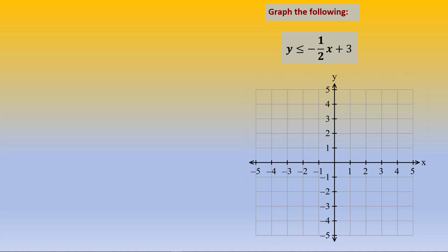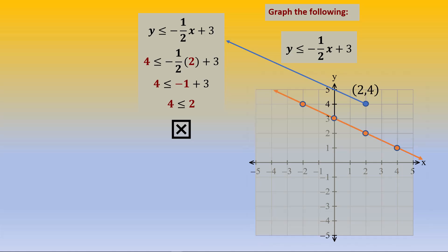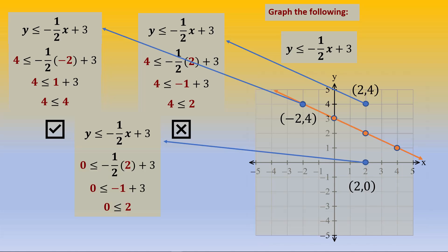Let's try this one. We locate 3 on the y-axis. We go down 1 and over 2 according to the slope — you can even go backwards. We decide the line is going to be solid, and we're going to fill in below the line because of the less than. We pick a point, 2, 4, which is outside the shaded region. We plug it in — this should not work, and indeed that is right. 4 is not less than or equal to 2, so this is an incorrect statement; 2, 4 is not in the solution set. We pick another point that's on the line, negative 2, 4, and since the line is solid, this point should work. We plug in the numbers, and get 4 less than or equal to 4. This is a correct solution. Pick another point that's actually in the shaded region, 2, 0. Plug it in, and it also works out — 0 is less than or equal to 2.